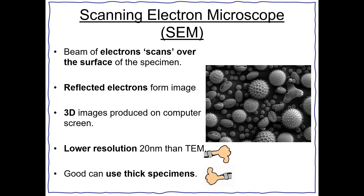The next type is a scanning electron microscope, or SEM. A beam of electrons scans over the surface of the specimen, and the reflected electrons form an image, so 3D images are produced on the computer screen. It has slightly lower resolution than a transmission electron microscope at about 20 nanometres, but it is useful because you can use thick specimens.